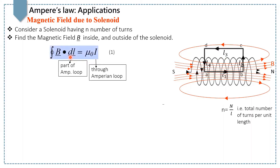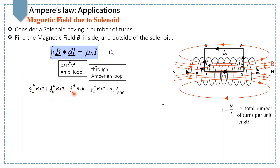To find the magnetic field inside and outside, we suppose a rectangular Amperian loop that has four sides: L1, L2, L3, and L4. By applying Ampere's law to each side, we get: closed path integral from A to B of B dot dL, plus from B to C, plus from C to D, plus from D to A of B dot dL, equals mu naught I enclosed.